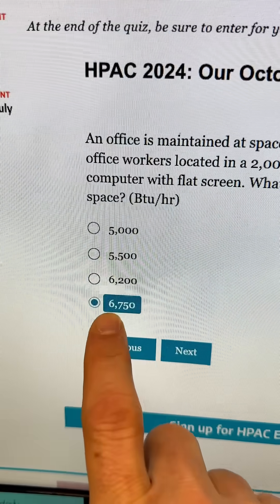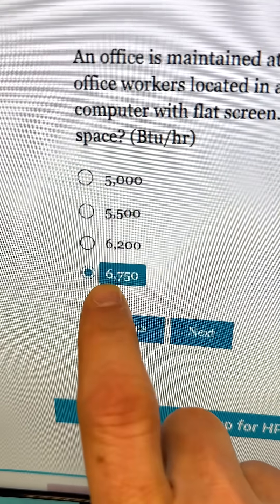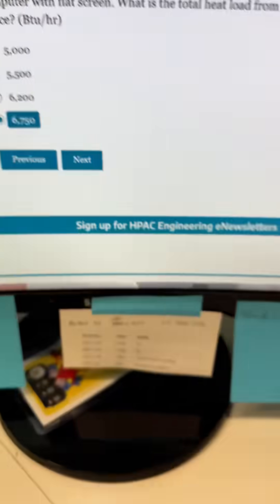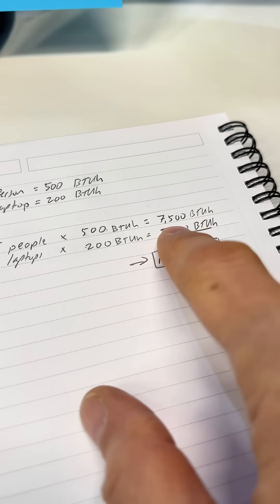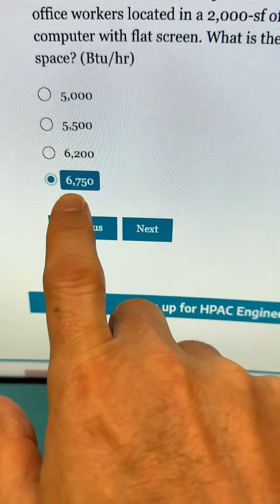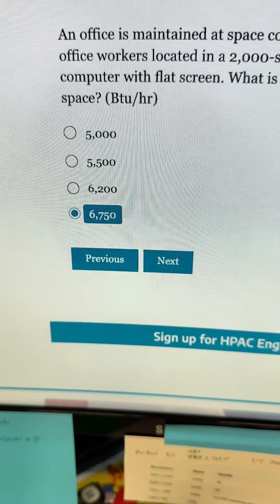The closest one is 6,750. Now, they may not be taking the laptop into account, but I'm still off here. They're probably using a different BTUs per hour than I am. What's your thoughts?